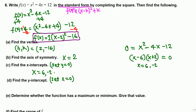To find the y-intercept, we set x equals 0 in the function: 0 minus 0 minus 12 equals negative 12. So the y-intercept is negative 12.